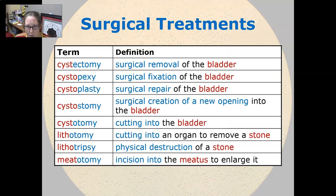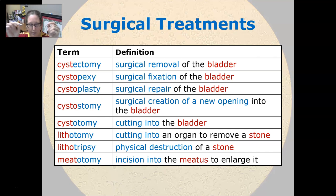Let's look at surgical treatments. Cystectomy is the surgical removal of the bladder. Cystopexy is the surgical fixation of the bladder — perhaps reattaching it back up a bit.